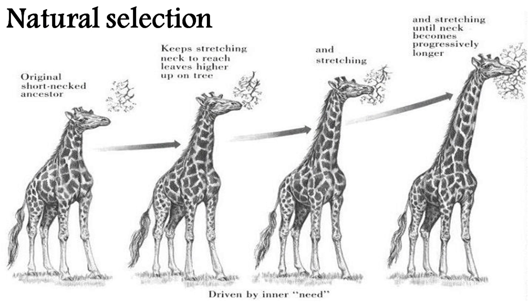The second principle is natural selection. The change that helps the organism survive is passed to the next generation. For example, look at the images on the screen. The first image is of the ancestor of a giraffe that is short-necked. Due to the surrounding situation of reaching out to eat leaves from trees, the giraffe kept stretching its neck and gradually, in time, the neck became longer. Now this change that helped the giraffe survive was passed to the next generation. This is the principle of natural selection.